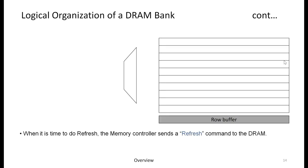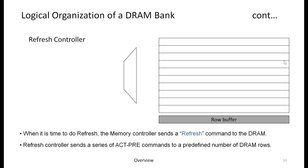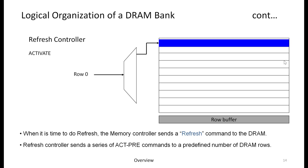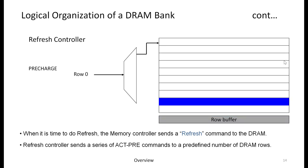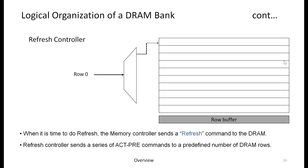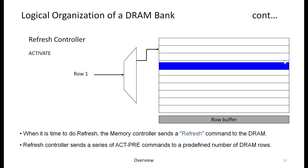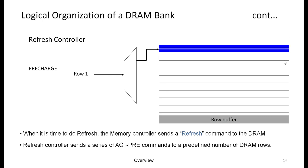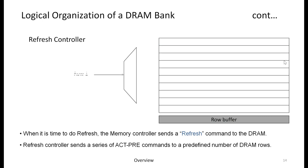Occasionally, DRAM cells need to be refreshed. When the time comes, the memory controller sends a refresh command to the DRAM bank. The refresh controller within the DRAM bank gets activated and issues a sequence of activates and precharges—reading Row 0 into the row buffer and writing it back, then doing the same for Row 1, and so on—refreshing a predefined number of rows each time the refresh command is received.